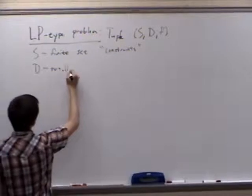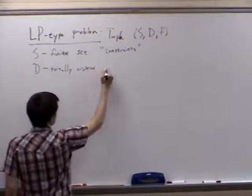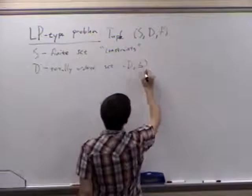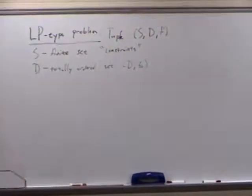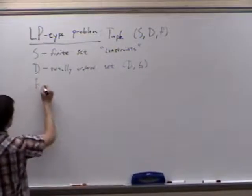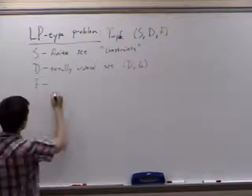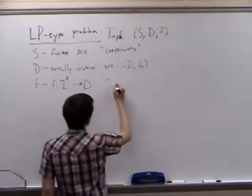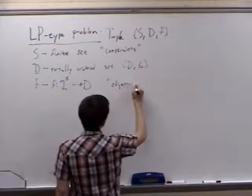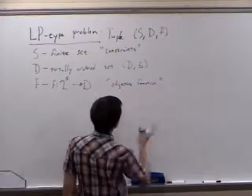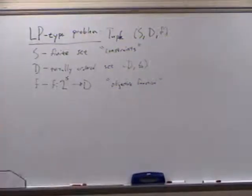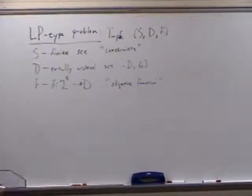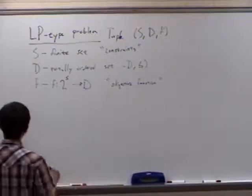We have this set D, which is a totally ordered set — just a set with a total order. And finally, we have this function F, which is a map from subsets of S to D. We'll think of this as being our objective — the thing that we would be trying to minimize, or optimize subject to all of the constraints. But nowhere in here will we actually define these things as constraints. Instead, we're going to enforce some axioms on this algebraic structure that they will have to obey.